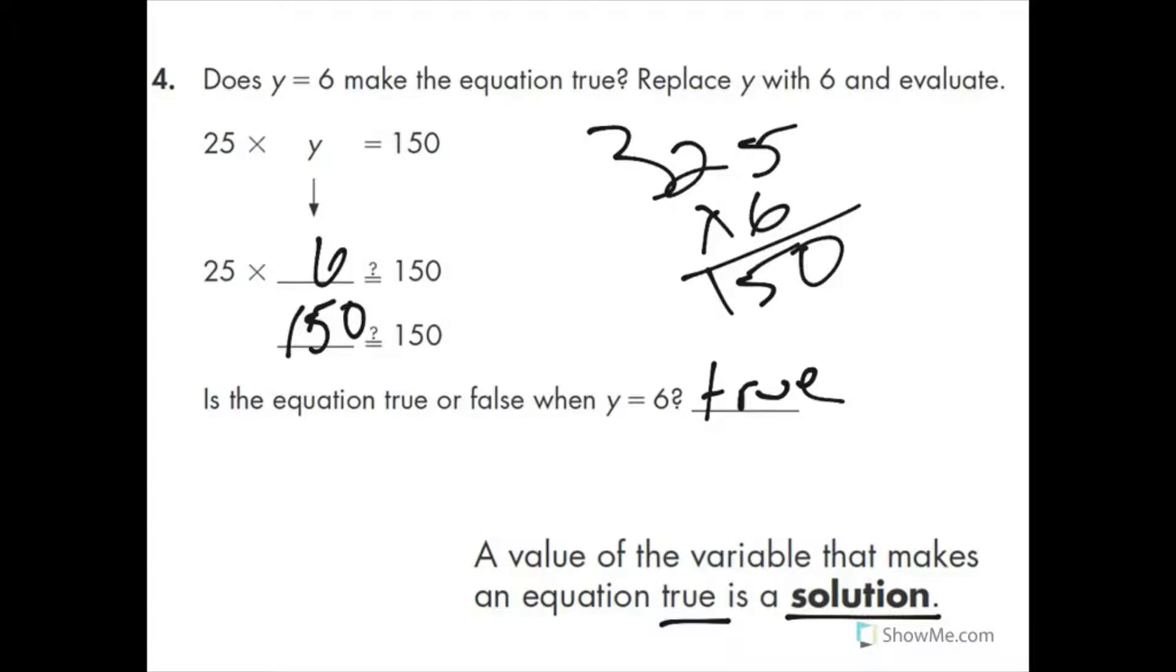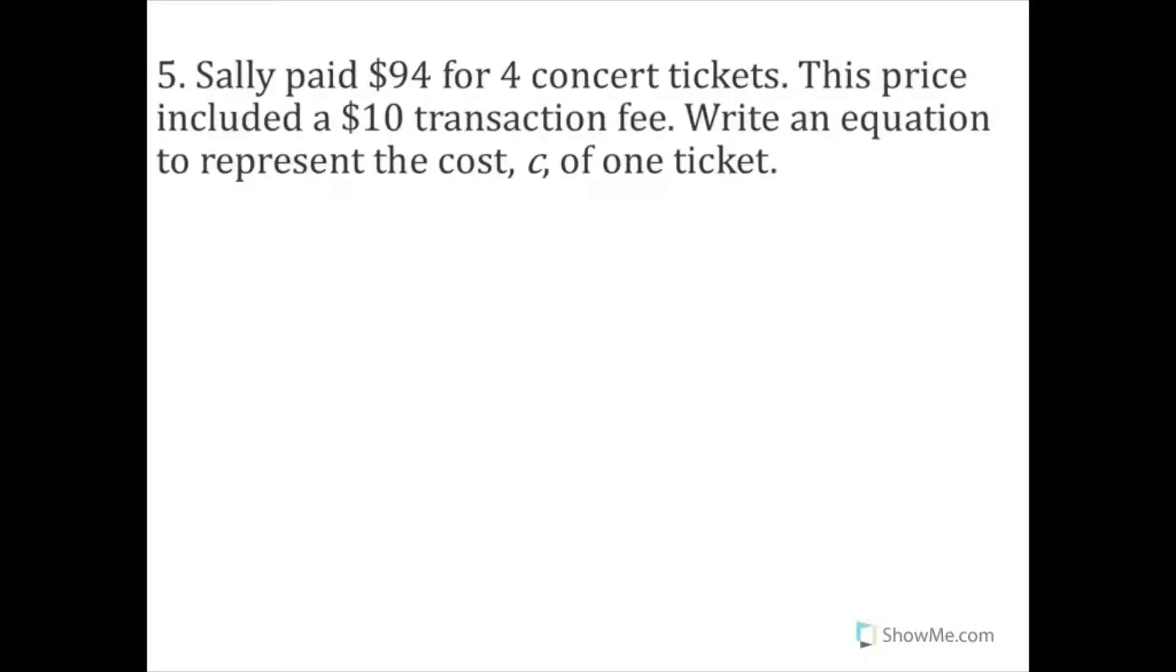Sometimes in algebra it wants us to write an equation. 5 and 6 wants us to write an equation. Let's see if we can do that. Sally paid $94 for four concert tickets. This price included a $10 transaction fee. Write an equation to represent the cost, c, of one ticket. Well, we want it to equal c, right? The cost of one ticket.